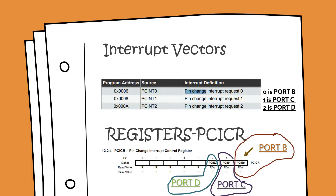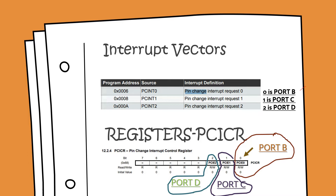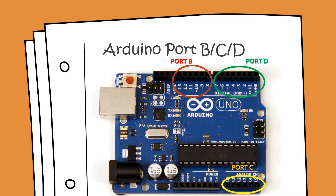Here are our three pin change interrupts: PCINT0, 1, and 2. PCINT0 corresponds to port B, PCINT1 corresponds to port C, and PCINT2 corresponds to port D. In the PCICR — the pin change interrupt control register — the bit PCIC0 corresponds to port D. So what we are doing here is enabling the pin change interrupt on port B.